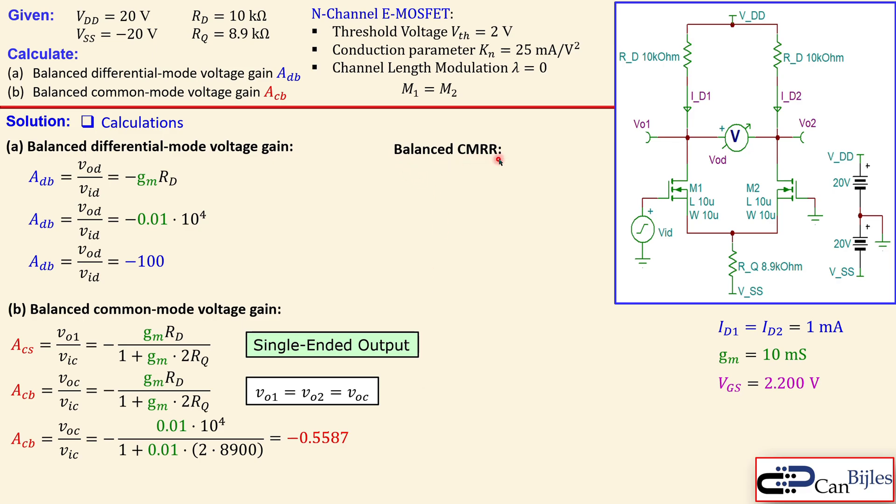We now do the balanced common mode rejection ratio, which is given by the absolute value of the differential mode voltage gain over the common mode voltage gain. We know minus 100, we know the common mode gain, this gives 179 and in dB that's 45.06 dB. The higher this value the better, meaning the lower the common mode gain, the better this ratio between the differential mode gain and the common mode gain. That's the required specification.